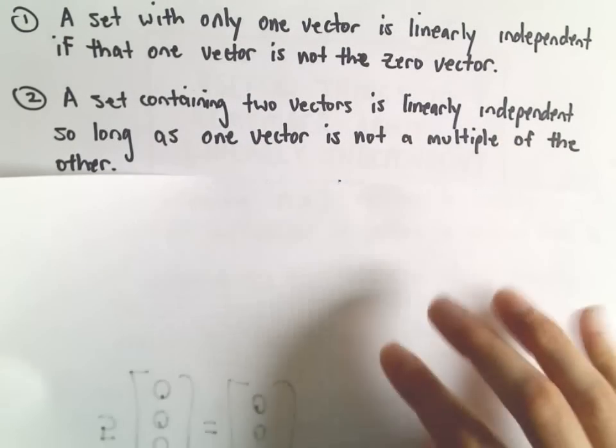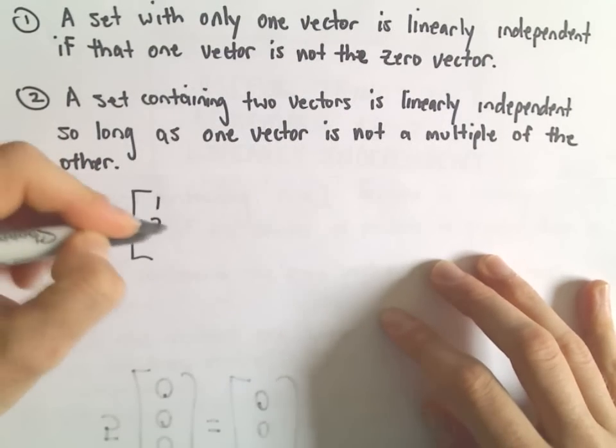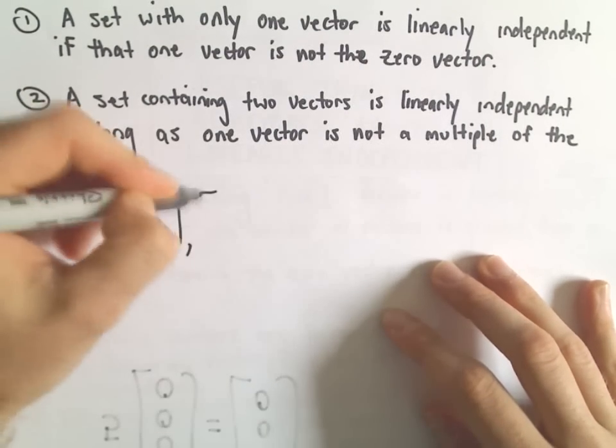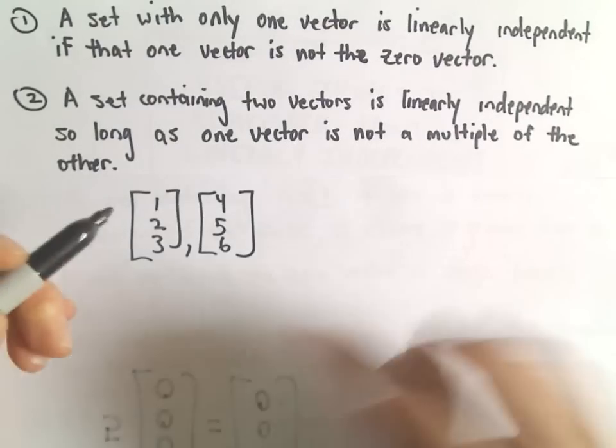If you have two vectors, they're always linearly independent as long as one is not a multiple of the other. So [1, 2, 3] and [4, 5, 6], those are going to be linearly independent.